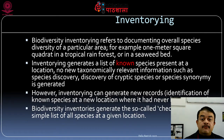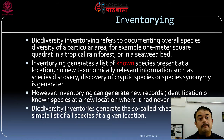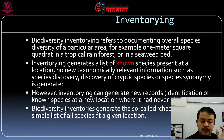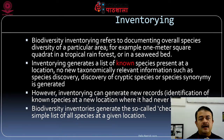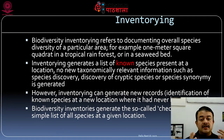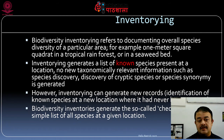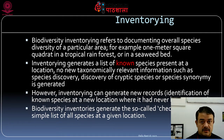Inventorying means biodiversity documentation of the overall species diversity of a particular area using checklists. It describes what the known species diversity is — nothing new, no alteration of taxonomy. Inventory is a simpler step, while characterization is more advanced and touches the core of taxonomy. It generates a list of known species present at a location; no new taxonomically relevant information such as species discovery, cryptic species, or synonymy is generated.